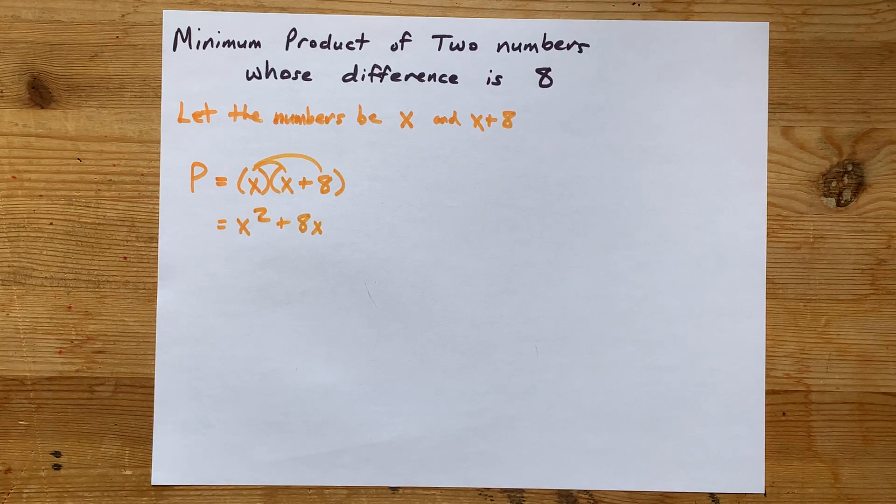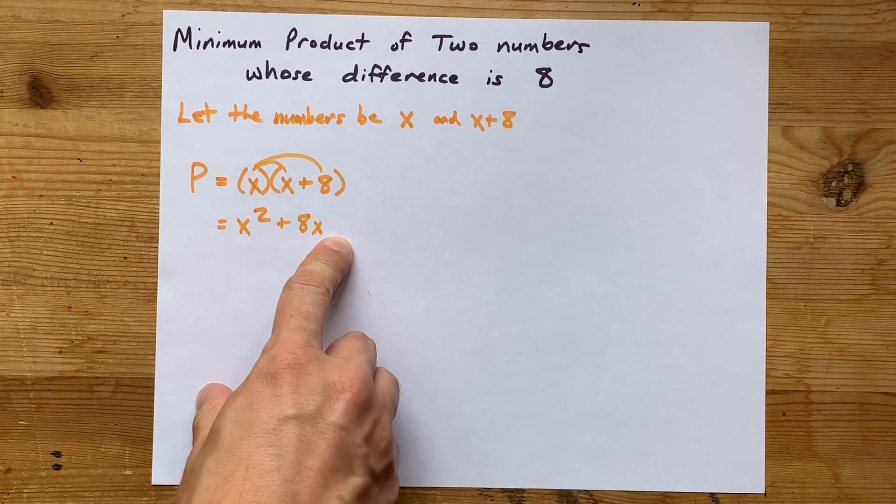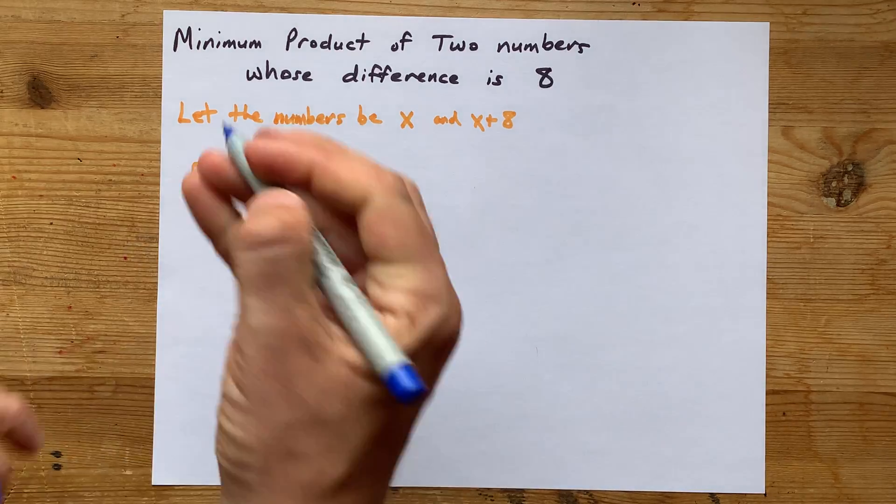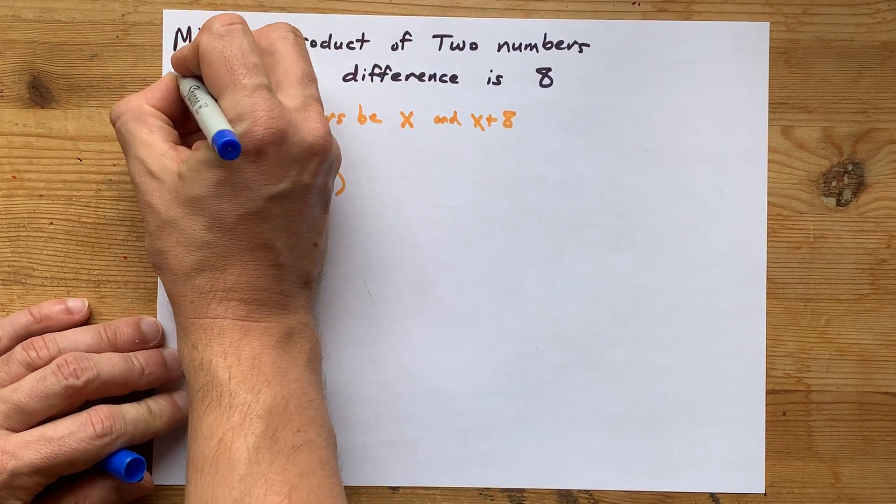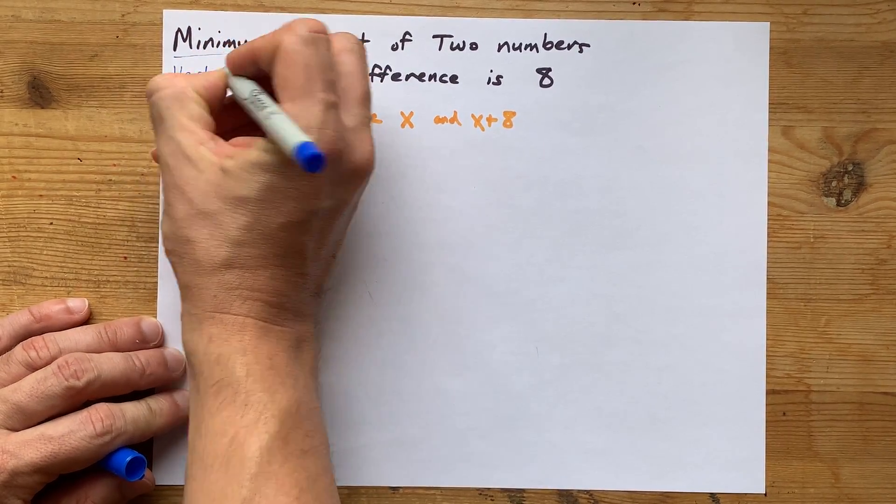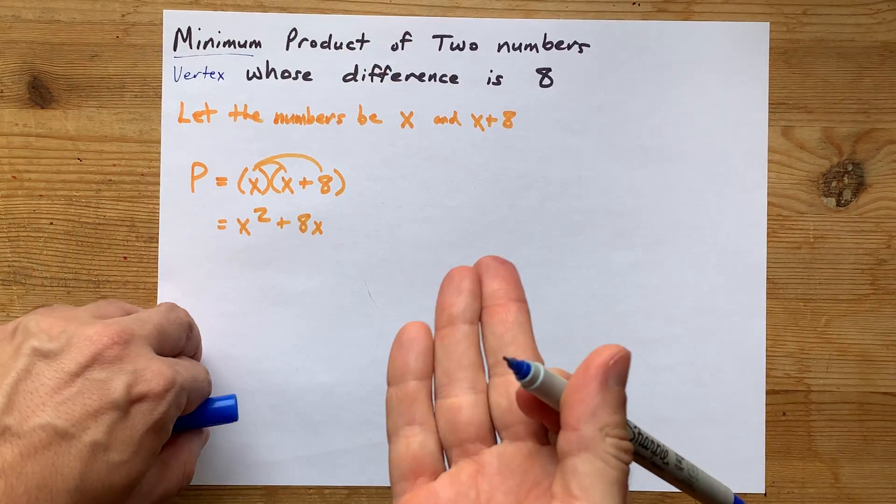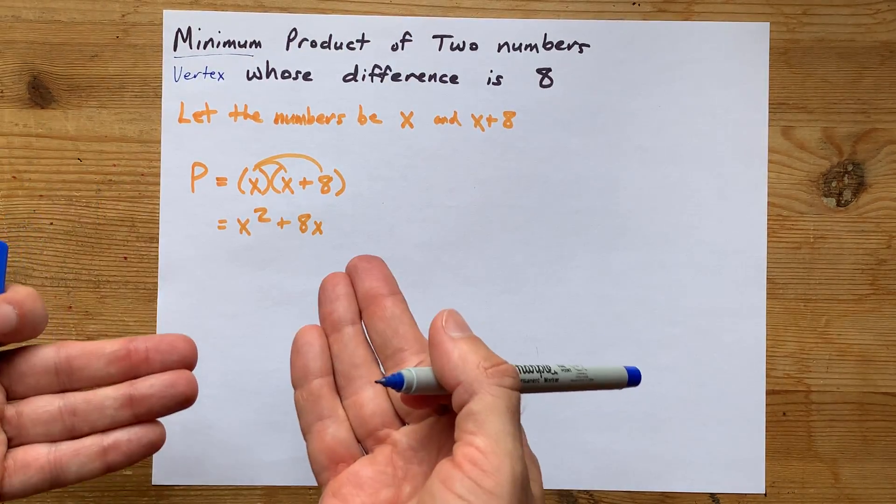Now, how are you going to find the minimum? Well, this is clearly the equation of a parabola, and the minimum of a parabola is always at the vertex. Maximum as well. How do you find the vertex of a parabola?